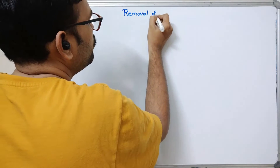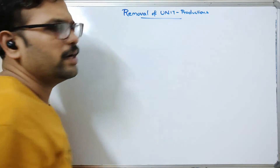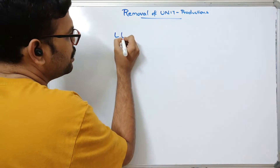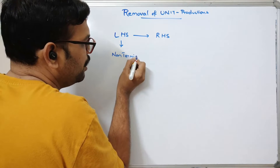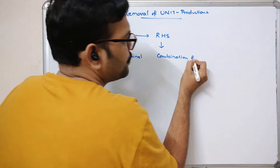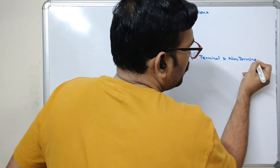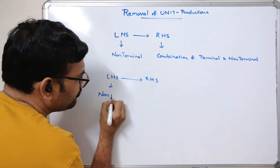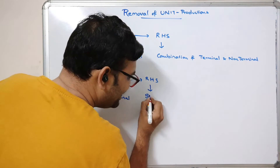Removal of unit productions — first let us understand what a unit production is, then we'll see the procedure for removing it. We know that a production has a left-hand side followed by a right-hand side. The left-hand side will always be a non-terminal, and the right-hand side can be a combination of terminals and non-terminals. If the LHS and RHS are both non-terminals...